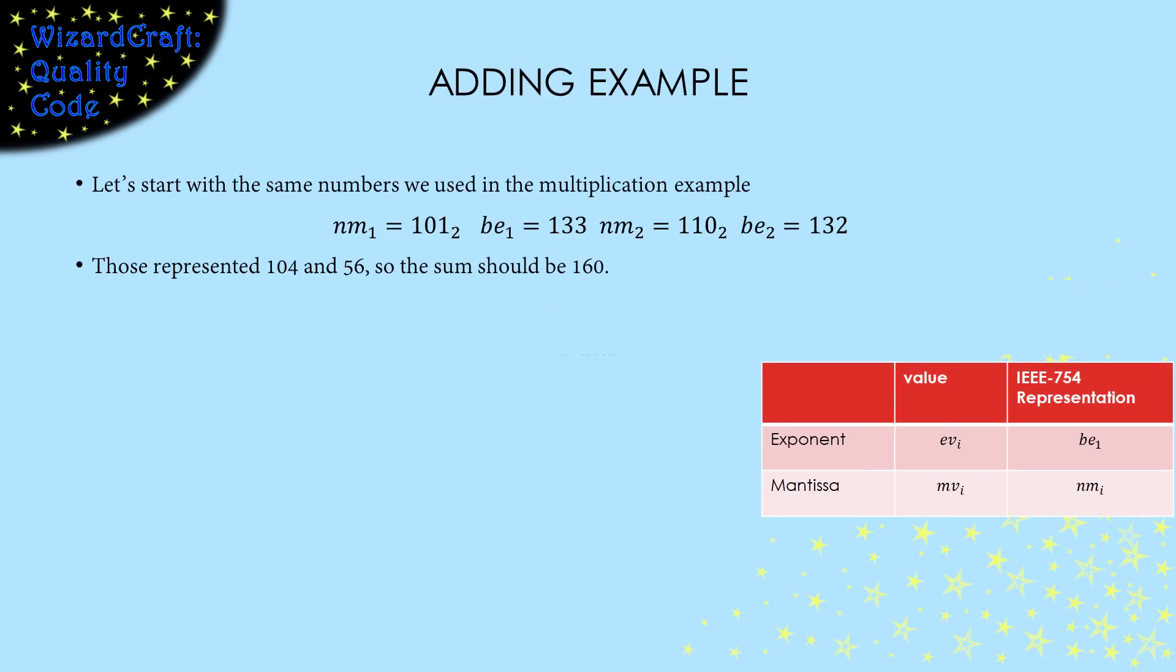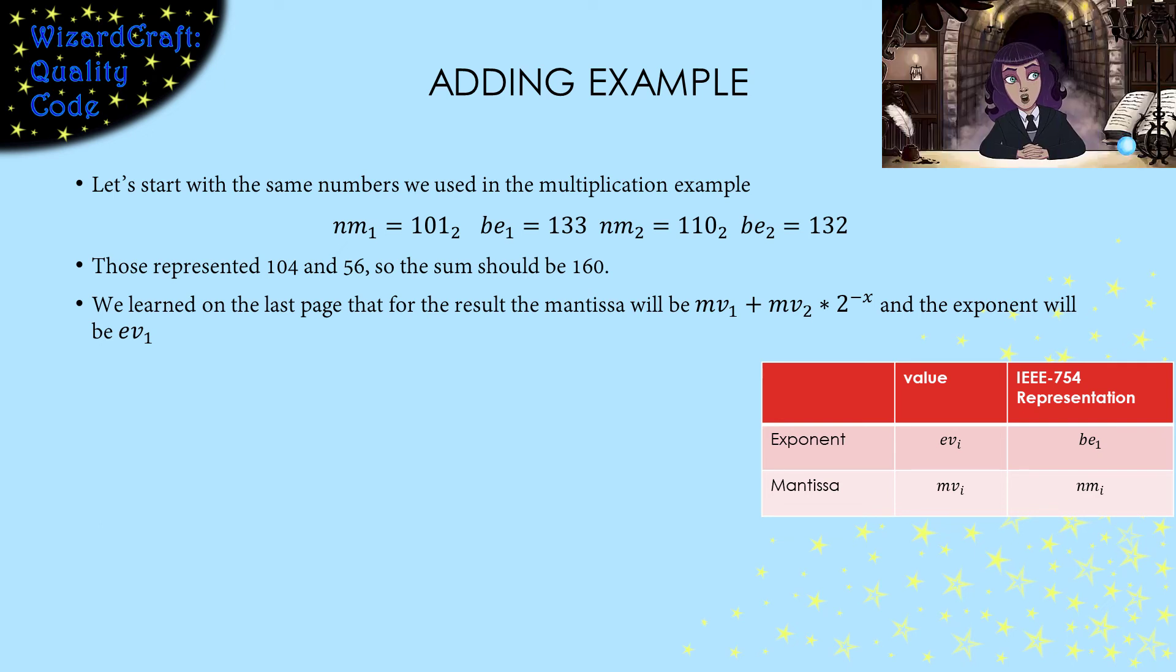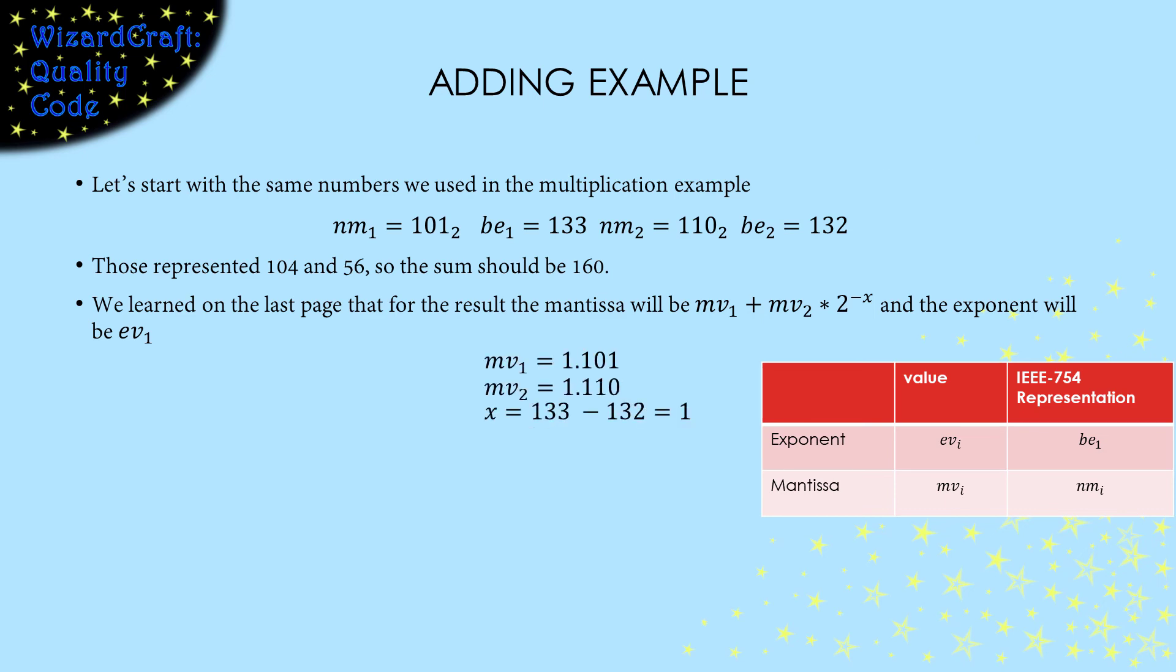Let's show how the machine will add the numbers that we used in the multiplication example. We know what their values were, so the sum we should end up with should be 160. The result will depend on the mantissa values, so we need to unnormalize them. The machine wouldn't do that. It would just add the normalized shifted mantissas, tack a 1, 0, binary 2 on the front, and renormalize. But you humans are weaker than that, so we'll do it on paper. This is easier to follow. I agree. Anyway, x is the difference of the exponents, and we can leave them biased for that calculation, so x is 1. Shift the second mantissa value and add them up. The resulting exponent will be 133 minus 127, which is 6, and the value of our result is 160.